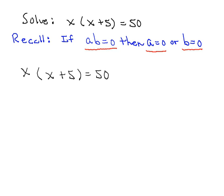So our example, which should look familiar, is x times the quantity x plus 5 is equal to 50. So our first task will be to put this into standard form. So we have x squared plus 5x being equal to 50.